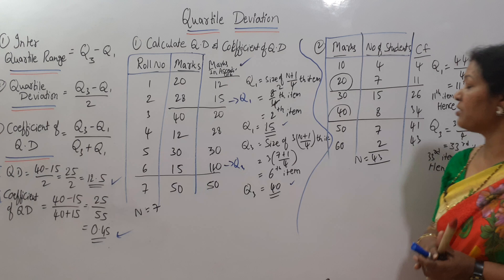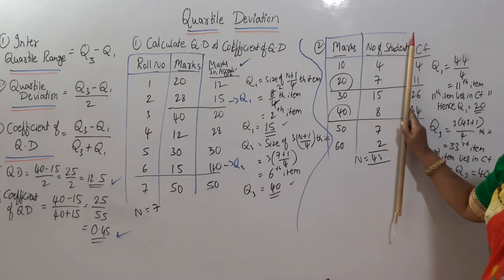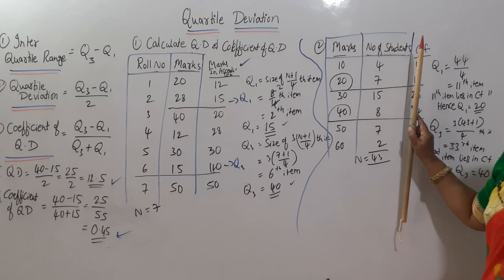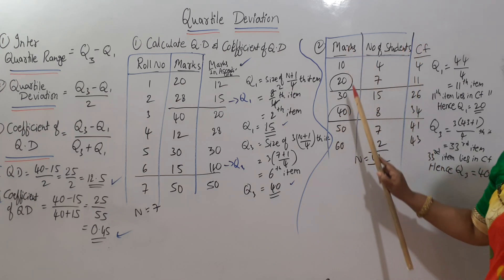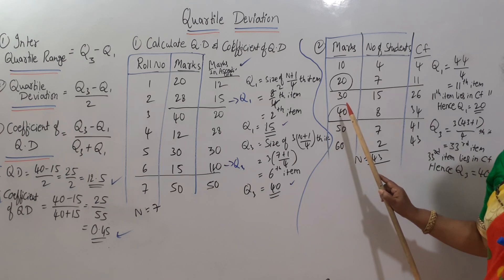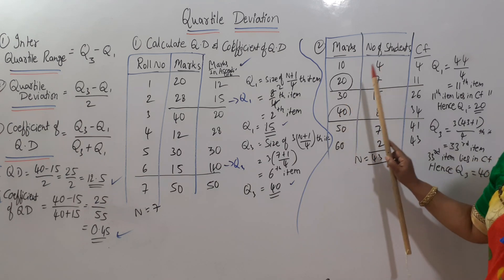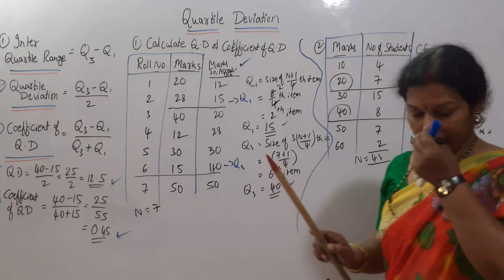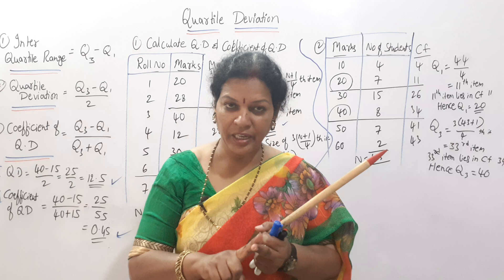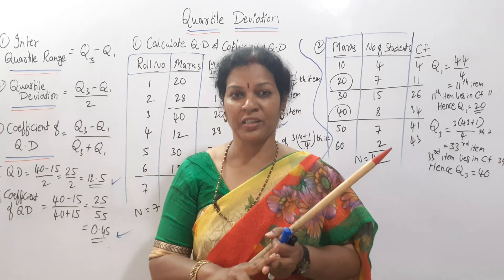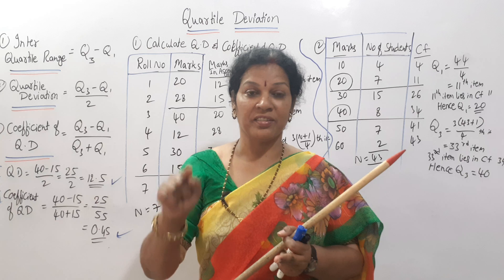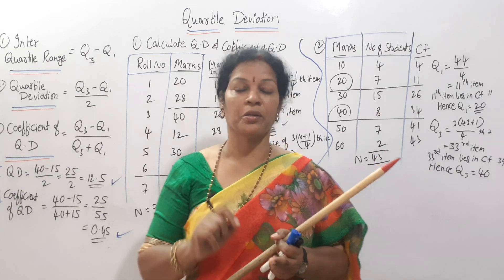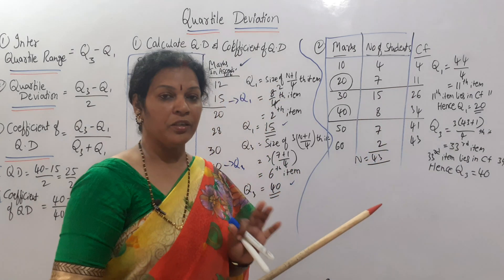Now we move to the discrete series. In a discrete series, the data consists of marks and the number of students. The marks would be a class interval in a continuous series. For discrete series, always remember: the first step — whether calculating median, quartiles, deciles, or percentiles — is to find the Cumulative Frequency (CF).